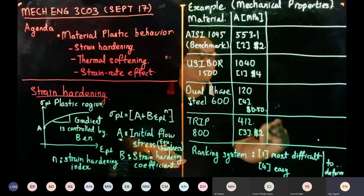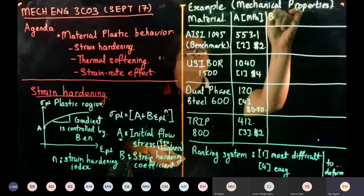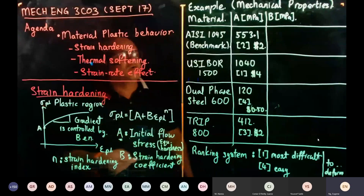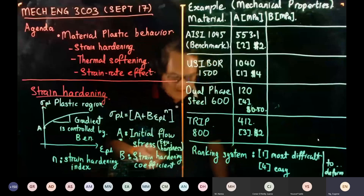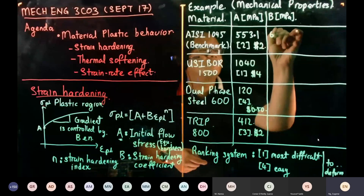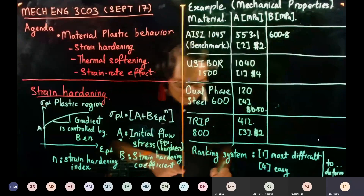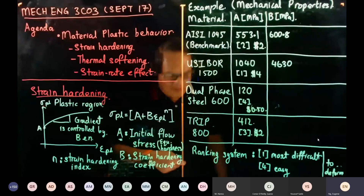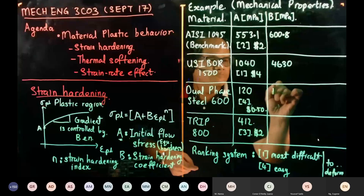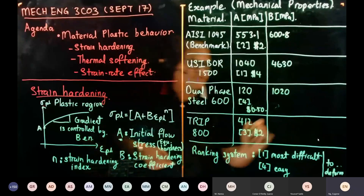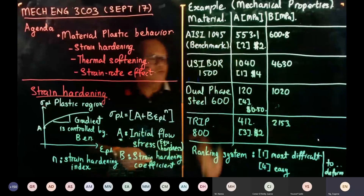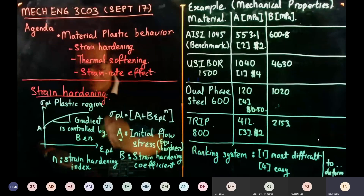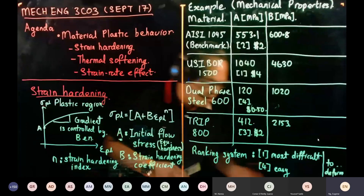Now we start looking at the b-value — the strain hardening coefficient — in MPa. For AISI 1045 it's 600.8; for Usibor 1500 it's 463.0; for one material it's 1020; and for another it's 2153. These b and n values describe the plastic hardening region of the stress-strain curve.